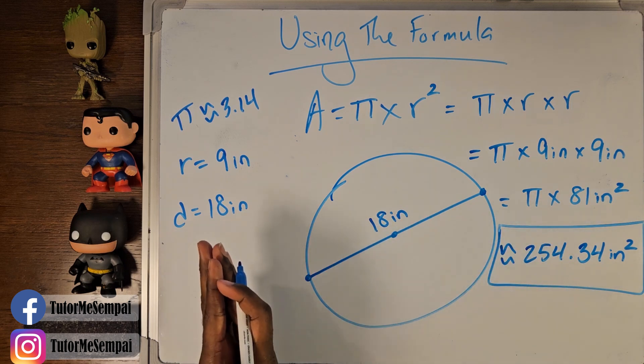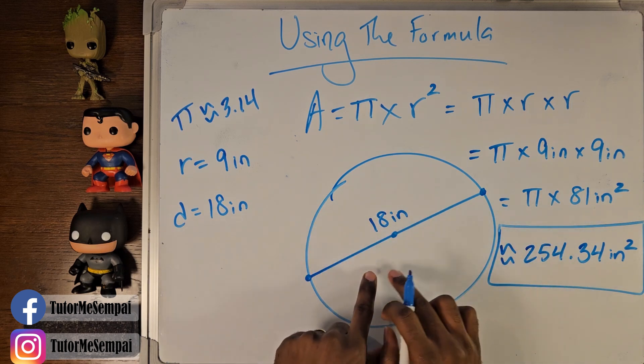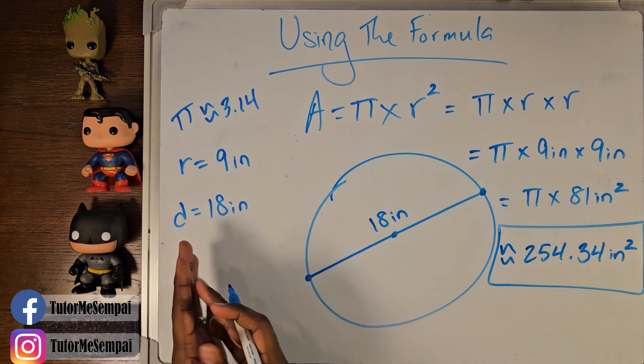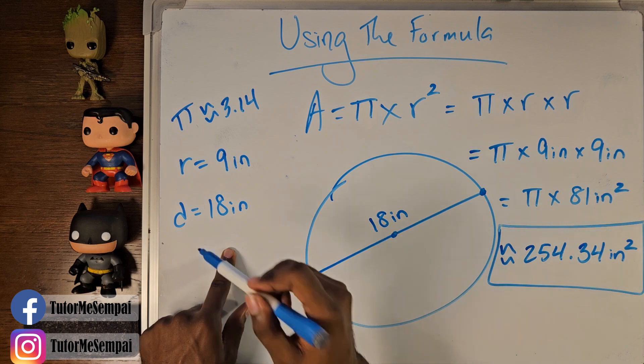And notice, we didn't have our radius to begin with. We had diameter. But we still found our area because we know that the radius is just half of the diameter. So I hope you were able to follow along with today's video and I hope you now know how to find the area for your circle.